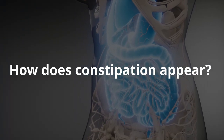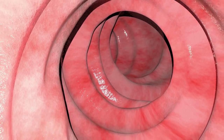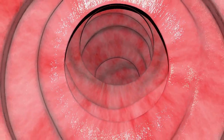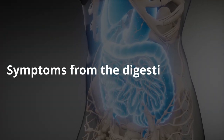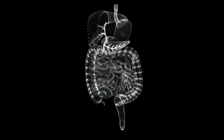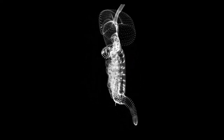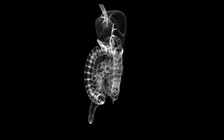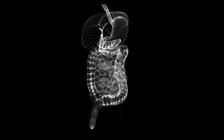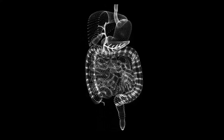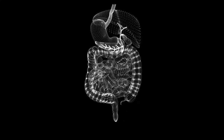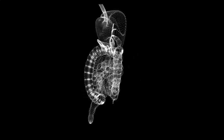How does constipation appear? Signs of constipation can be divided into changes in the gastrointestinal tract and general manifestations. Symptoms from the digestive system include: lack of stool for more than three days, feces in the form of dense dry lumps, the need to push to get stool, pain and heaviness in the abdomen, nausea and belching, and bloating and flatulence.